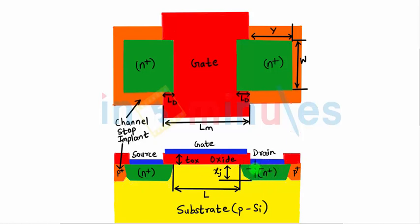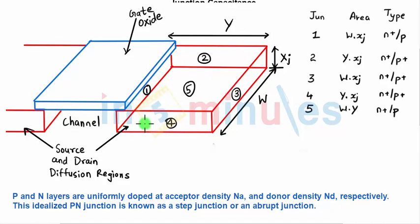Around the drain there will be a depletion region charge, and similarly around the source. Between the junction and the substrate there is a capacitance — between your junction, your depletion region, and your substrate — and that capacitance is what we are interested in finding. We are going to zoom into this N-type region and draw a 3D diagram.